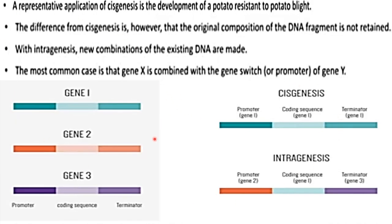In recent trends in plant breeding, there are two types: one is cisgenesis and another one is intragenesis. In the case of cisgenesis, both the promoter and terminator are from the same species.